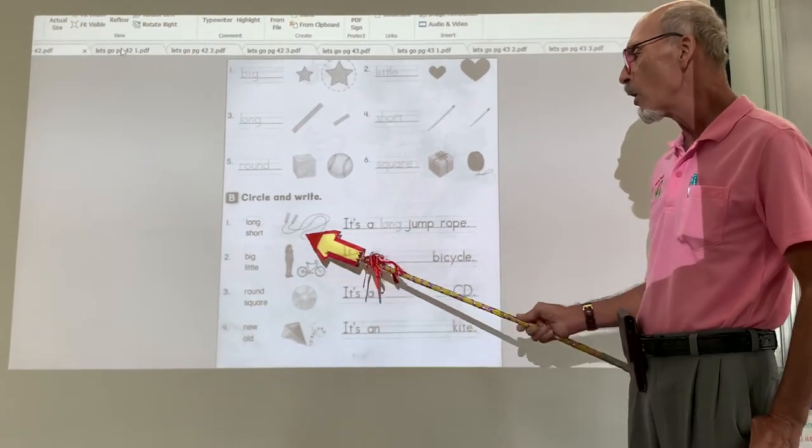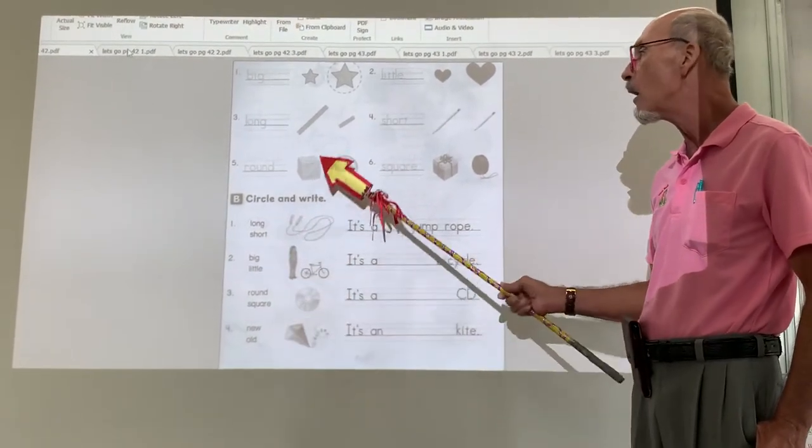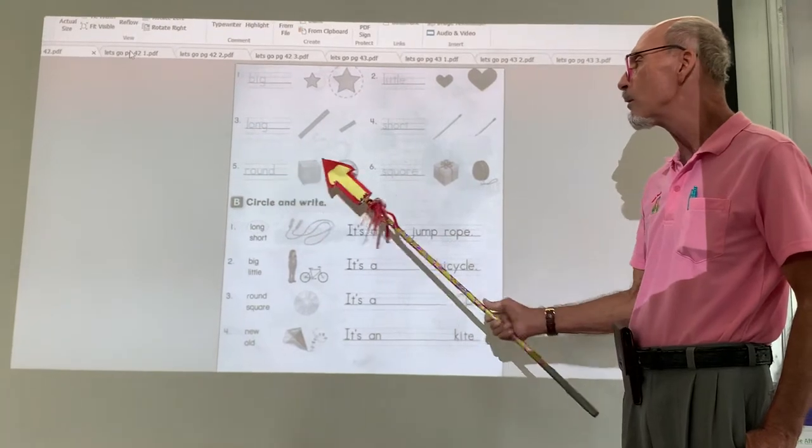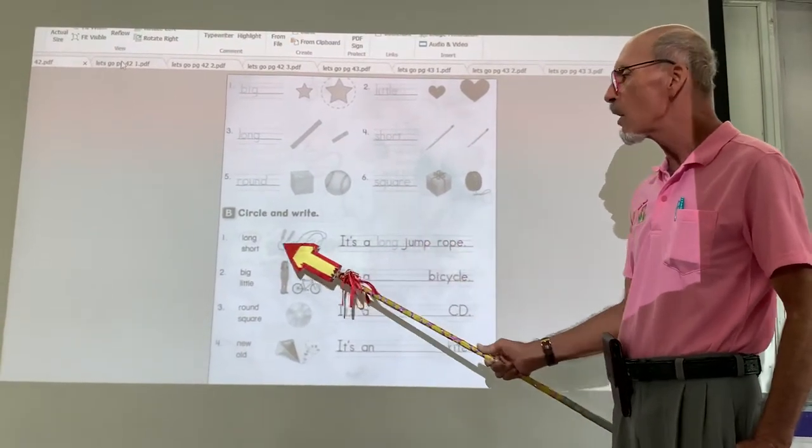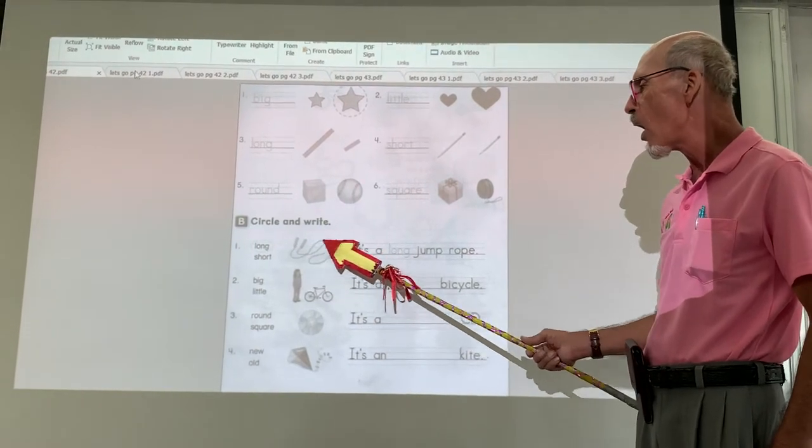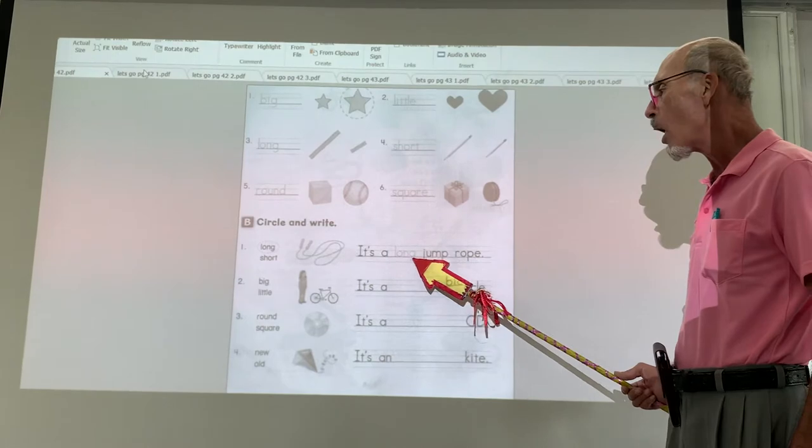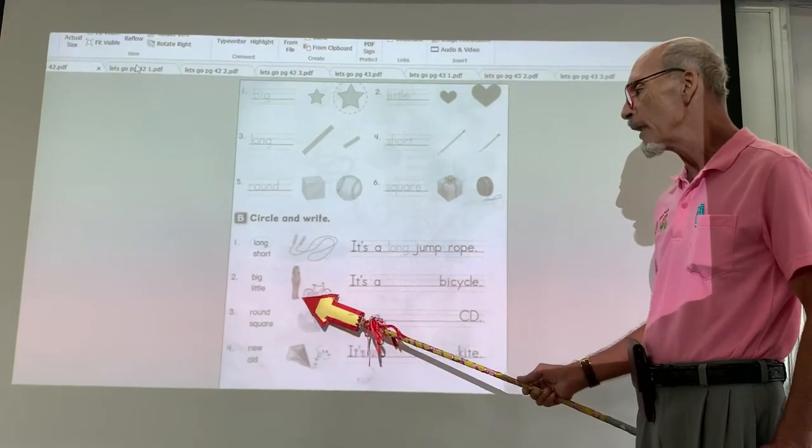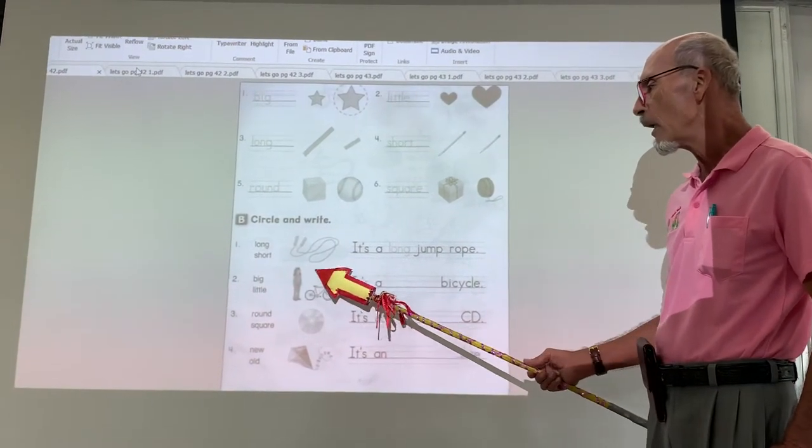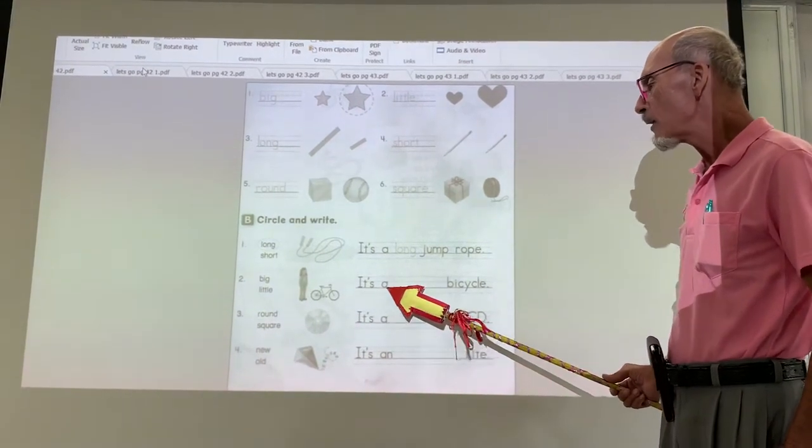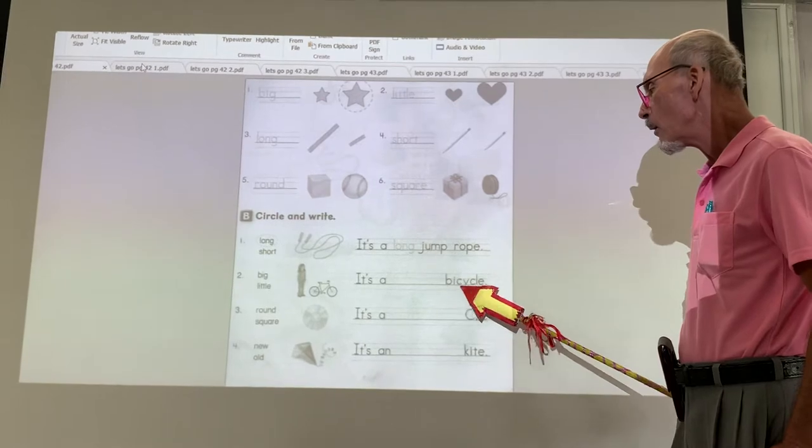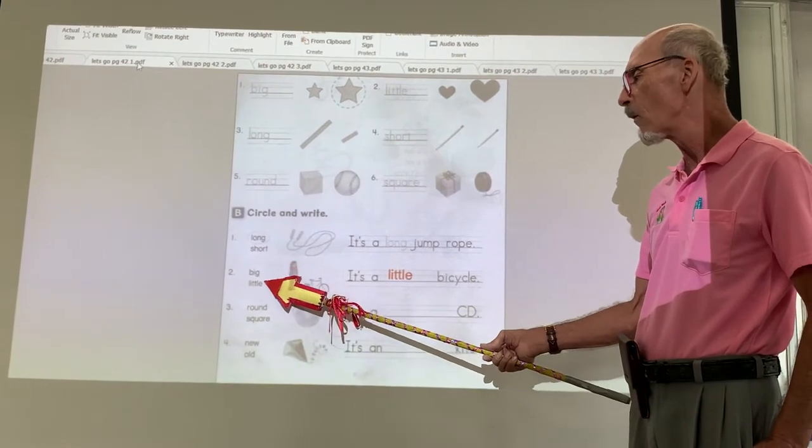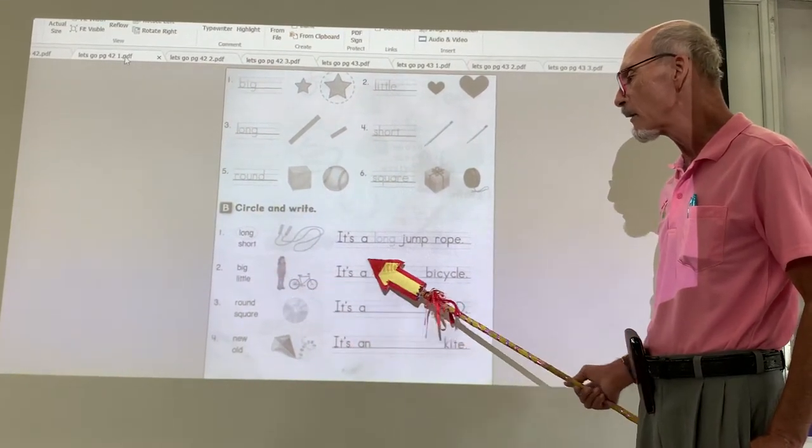The next part of this, we're going to look. Remember, we talked about big, little, long, short, round, square. Now, look at this. It says long. A long jump rope. It's a long jump rope. Looking at this, a girl and a bicycle. It's a bicycle. Is it big or is it little? Big or little? The bicycle is little.